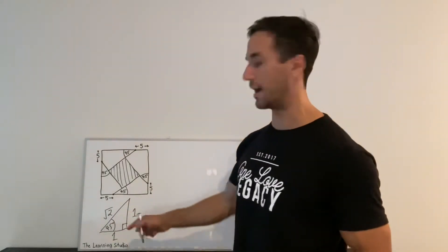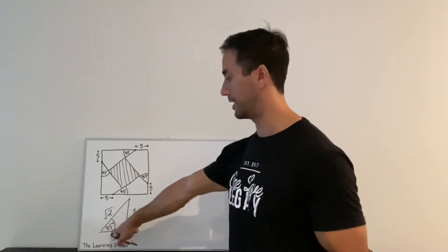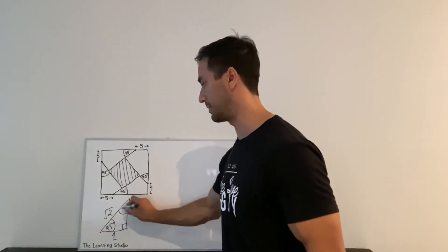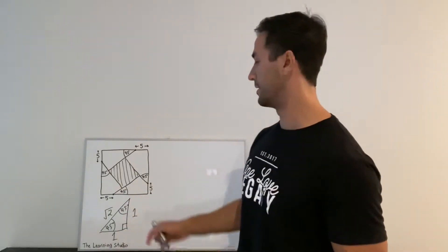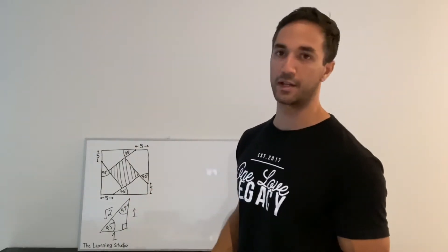If we have a right angle triangle with a 45 degree angle here we know the other angle has to be 45 degrees so that they all add up to 180 degrees which forces it to be an isosceles triangle.